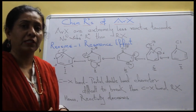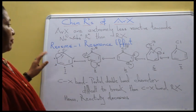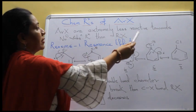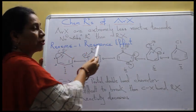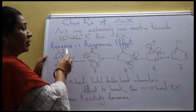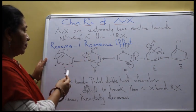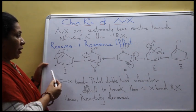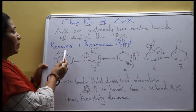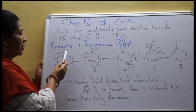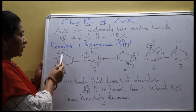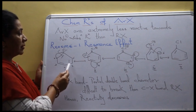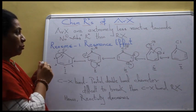Let's start discussing the first factor, which is the resonance effect. Haloarines are extremely less reactive towards nucleophilic substitution reactions when compared to haloalkanes. The first reason is resonance. Chlorine has three lone pairs. In the benzene ring, we have alternating double and single bonds — first double, second single, then double, single, double. Due to resonance, what happens?